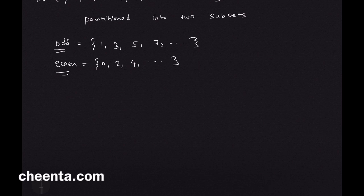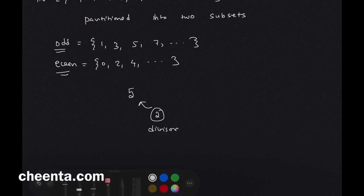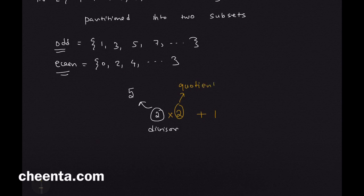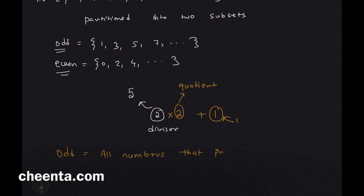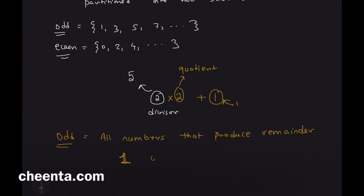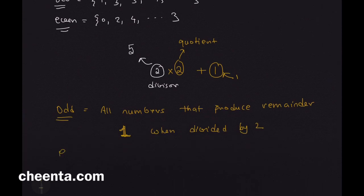Now how do we define odd and even rigorously? It's very simple. You take a number — let's say 5 — and divide it by 2, so 2 is the divisor, and you check the remainder. If I divide 5 by 2, the quotient is 2 and the remainder is 1. So all numbers that produce remainder 1 when divided by 2 are known as odd numbers.